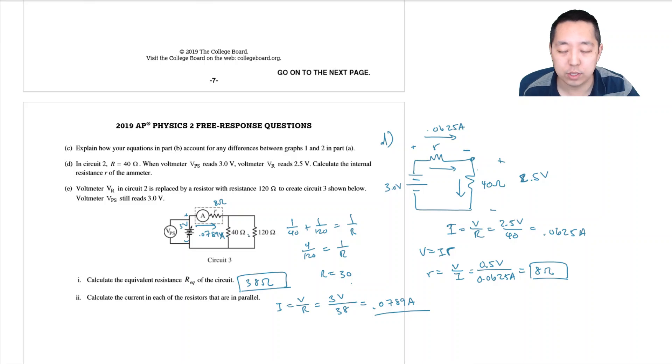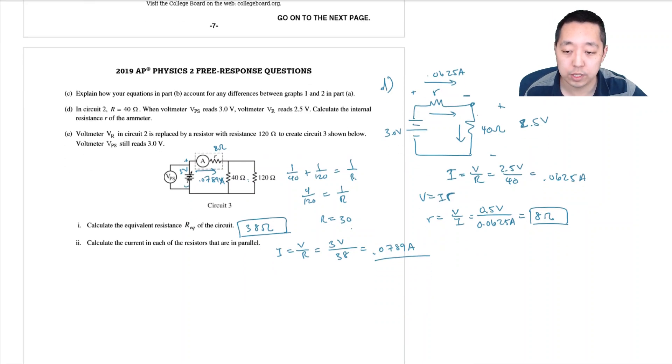Now the problem is that current doesn't flow between each of these, right. The simplest way is to say like, these two resistors, I got rid of this and replaced this one with the 30 ohm equivalent resistance. So I can now calculate what the voltage drop is across this 30 ohm resistor. That voltage drop would equal IR which is equal to 0.0789 amps times 30 ohms and so that voltage would be 2.368 volts.